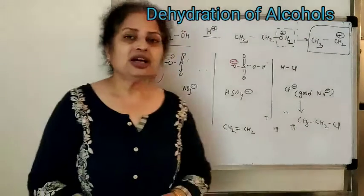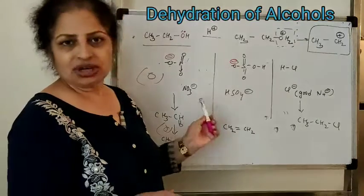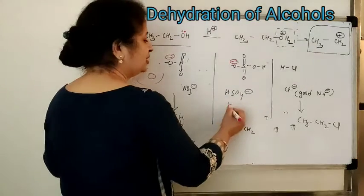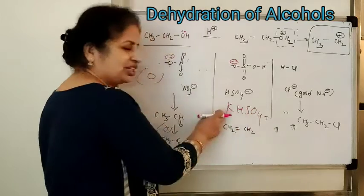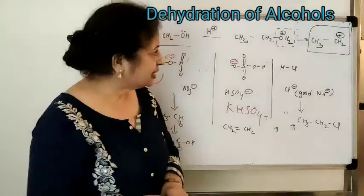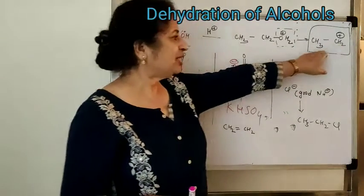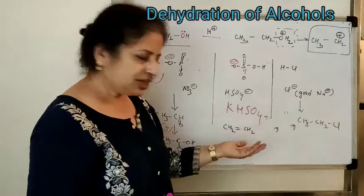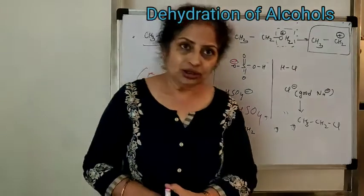So what do we do? Instead of hydrochloric acid and nitric acid, we either take H₂SO₄ or we take a salt — which salt? Potassium hydrogen sulfate (KHSO₄). We see that this is an elimination reaction. The carbocation will extract hydrogen from the alpha carbon, and you get an alkene.